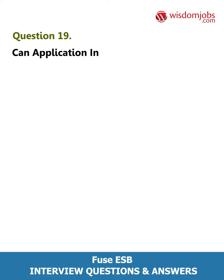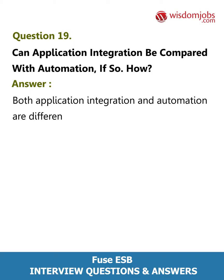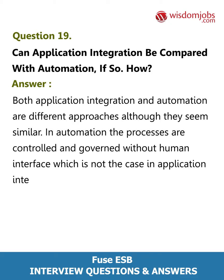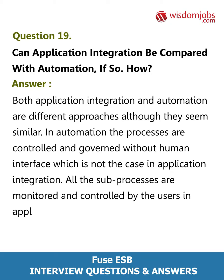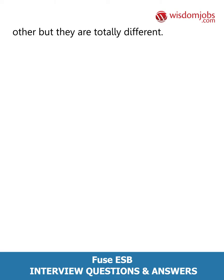Question 19: Can application integration be compared with automation? If so, how? Answer: Both application integration and automation are different approaches, although they seem similar. In automation, the processes are controlled and governed without human interface, which is not the case in application integration — all the sub-processes are monitored and controlled by the users.